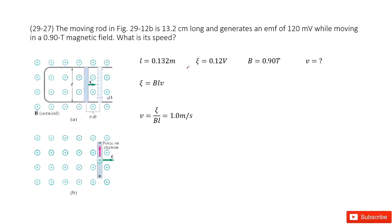So there we have a moving bar. And we know its length, induced EMF, and magnetic field density. Then we need to find its velocity.